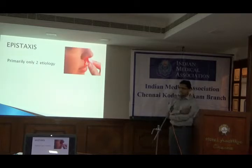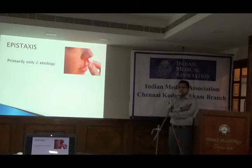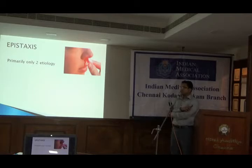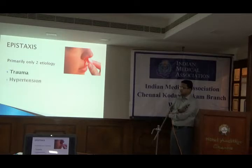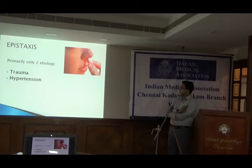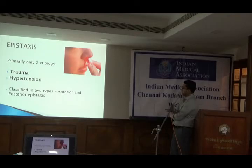Coming next to epistaxis. We see epistaxis cases on a day-to-day basis. There are a lot of causes, but primarily there are only two basic etiologies: trauma and hypertension. Invariably 90% of cases will be one of these two. Epistaxis is classified into two types: anterior epistaxis when bleeding comes anteriorly, and posterior epistaxis when bleeding goes behind into the nasopharynx.